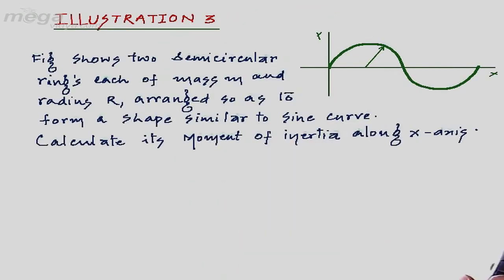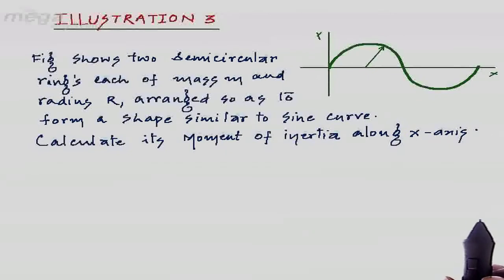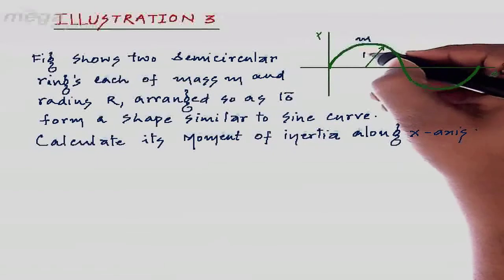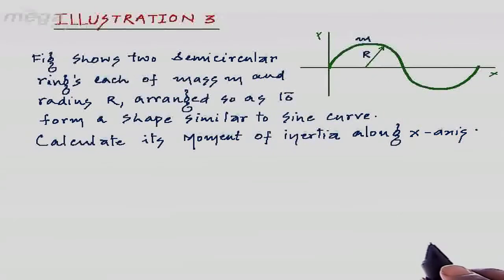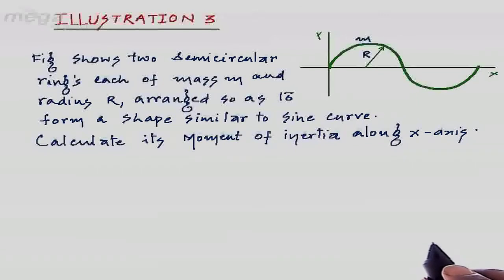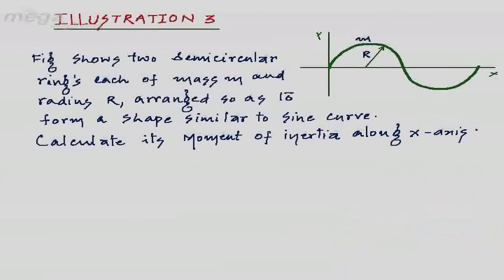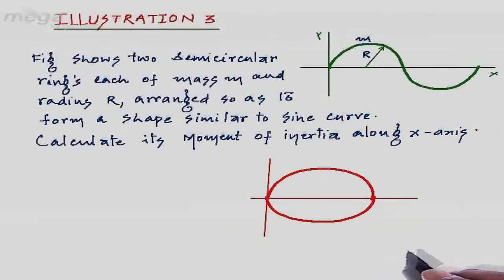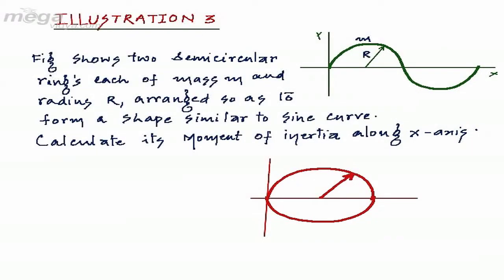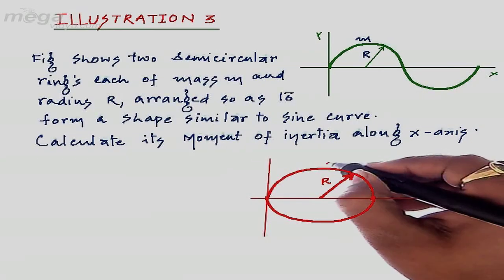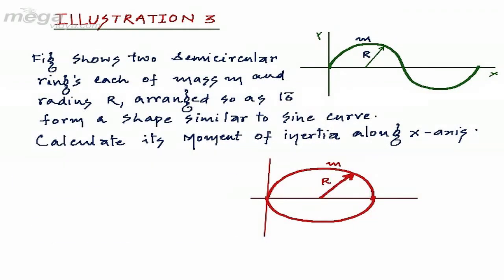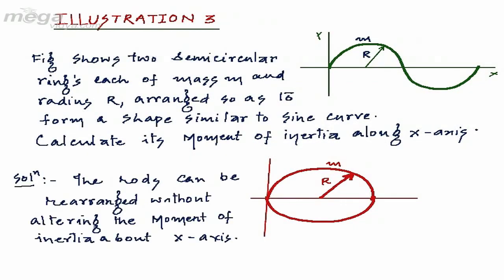Let's consider one more illustration. Two semicircular rings are given, each with mass m and radius r, arranged so as to form a sine curve. We have to calculate the moment of inertia along the x-axis. To solve this, we can rearrange the rings to form a complete ring without altering the moment of inertia. The rearranged shape becomes a circular ring of radius r and total mass 2m.